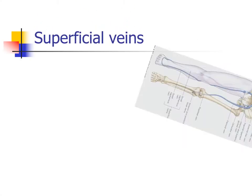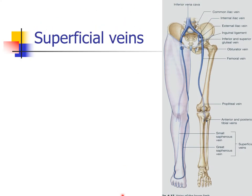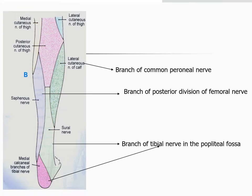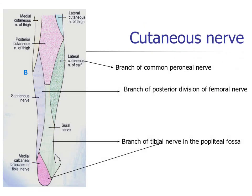Now, superficial veins. You already learned about the dorsal venous network. Medially, there is the great saphenous vein which drains into the saphenous opening and into the femoral vein. The small saphenous vein arises from lateral to the dorsal venous network. It lies at the back of the leg muscles and then drains into the popliteal vein.